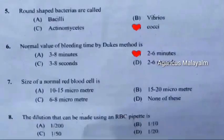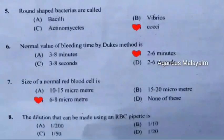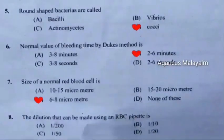Seventh question: Size of a normal red blood cell is. Correct answer is Option C: Six to eight micrometers.